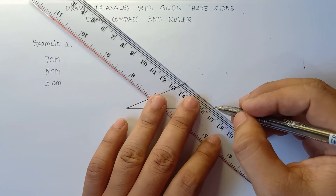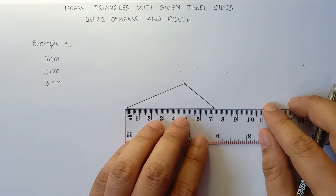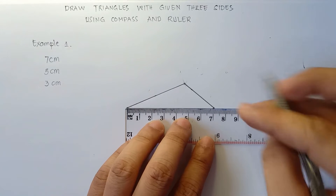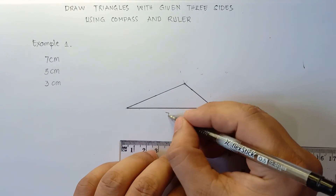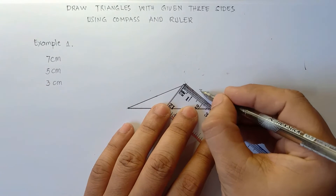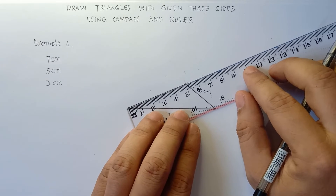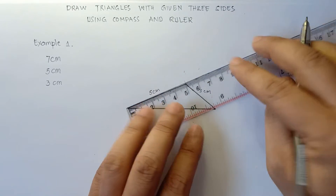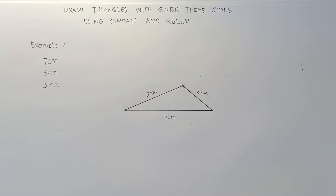Let's measure it again: 7 centimeters — yep, 7 centimeters. And this is 3 centimeters — yep, 3 centimeters. And this will be 5 centimeters — yep, 5 centimeters. That's it, all set! So that's how you draw with given three sides. Let's have example number 2 for you to really understand this one, given three sides.